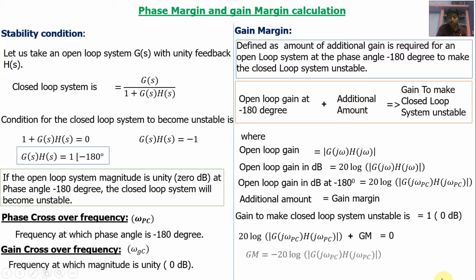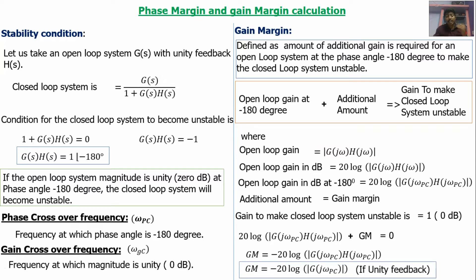Therefore, gain margin equals minus 20 log|G(jω_pc)H(jω_pc)|. If the feedback is unity, gain margin equals minus 20 log|G(jω_pc)|. This is the final equation, and this is the justification for the gain margin formula.